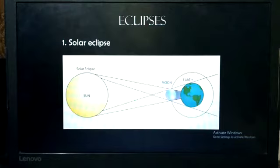The shadow of the moon falls on the earth and sun cannot be seen. So, it can be partial or complete.